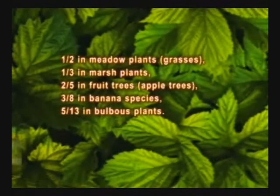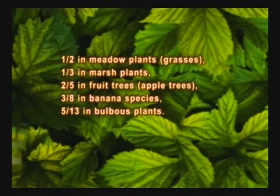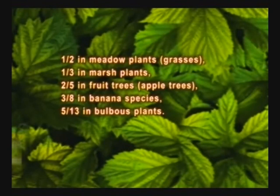Fractions peculiar to some plants are as follows: one over two in meadow plants and grasses; one over three in marsh plants; two over five in fruit trees, such as apple trees; three over eight in banana species; and five over thirteen in bulbous plants.